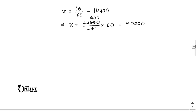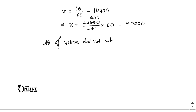Now find the percentage of voters who did not vote. Number of voters who did not vote equals 1,00,000 minus 90,000 equals 10,000. That is the first answer — the number of voters who did not vote is 10,000, and you need to convert it into a percentage.